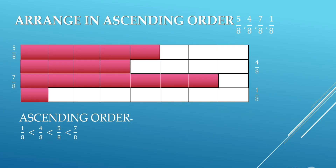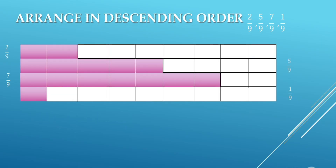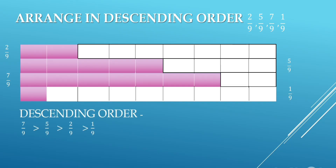Now arrange in descending order. The numbers are 2 upon 9, 5 upon 9, 7 upon 9, and 1 upon 9. In descending order, we arrange fractions in decreasing order. We take the greatest number first, that is 7 upon 9. So descending order is: 7 upon 9 > 5 upon 9 > 2 upon 9 > 1 upon 9.